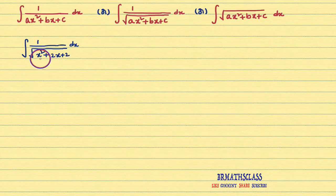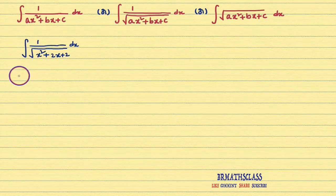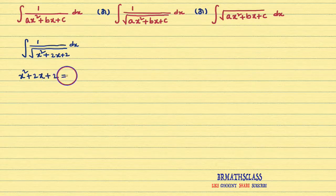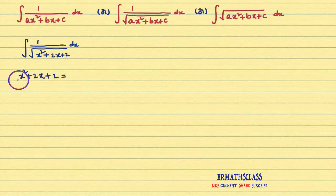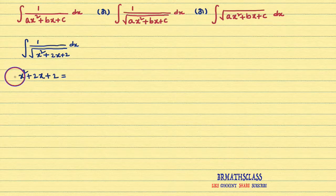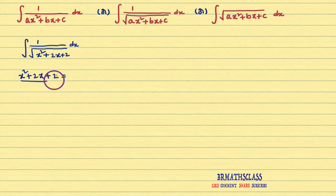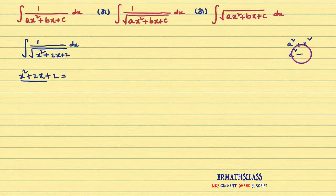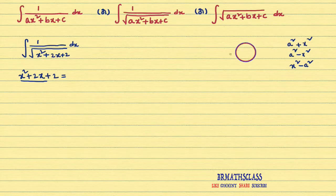What is that procedure? First, we consider the expression ax² + bx + c. Here, that expression is x² + 2x + 2. After considering this expression, make sure the x² coefficient is 1. If the x² coefficient is not 1, we make it 1 by taking that number common. Here, the x² coefficient is 1 already. My main intention is to write this full expression in any one of these forms: a² + x², a² − x², or x² − a².